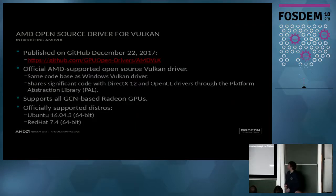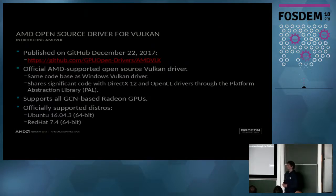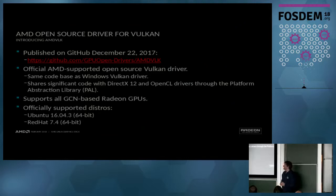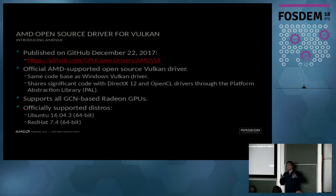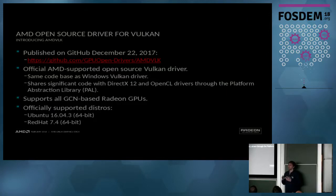Now let me talk a bit longer about the big news from December. We've been saying for a long time that we will have an open-source Vulkan driver, and the internal team worked hard to make that possible and now it has happened. You can download it from GitHub, you can build it yourself, and some people have done that so it should work. It is the same code base that the Windows Vulkan driver uses — and actually it is largely even the same code base that the Windows DirectX 12 driver uses, because they internally share a lot of code in a common library called PAL, the Platform Abstraction Library.